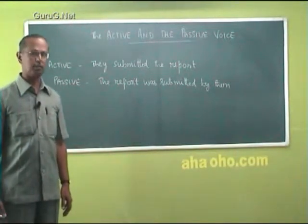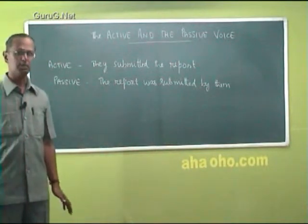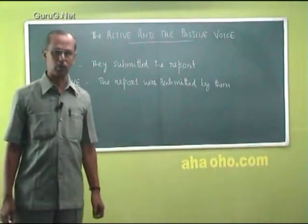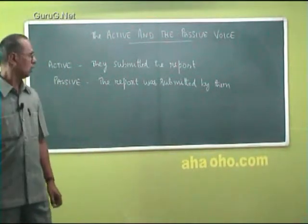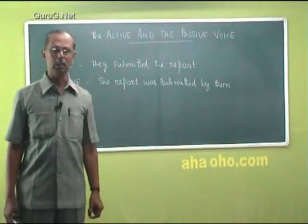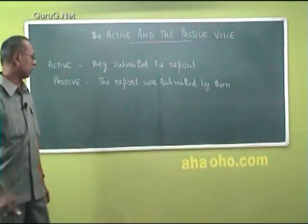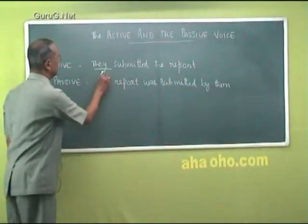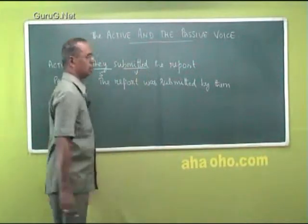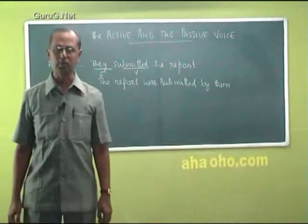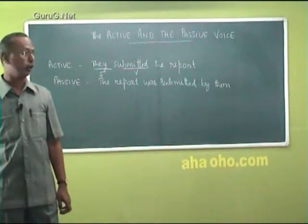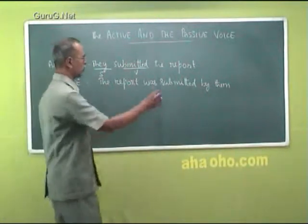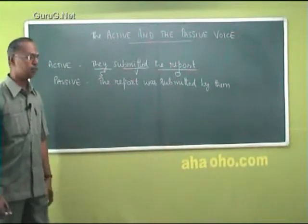The method of conversion from the active to the passive has certain principles or steps involved. When we look at a sentence given in the active voice that has to be converted into the passive voice, we first break the sentence into its subject, verb, and object. In the active sentence 'they submitted the report,' 'they' is the subject, 'submitted' is the verb, and we find out the object by asking 'what' or 'whom' on the verb. They submitted what? The answer is 'the report,' which becomes the object of the sentence.